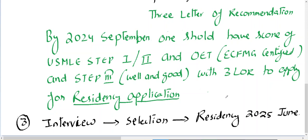After buying the IRAS token, you apply for residency and fill up all the required criteria. You then start getting interview invitations around October, November, and December. Let's say you receive 15 to 20 interviews — there is then an NRMP match, and if selected, you start residency by June 2025.